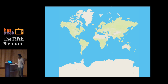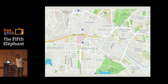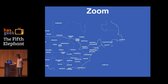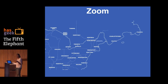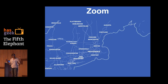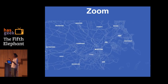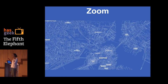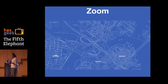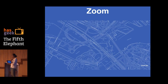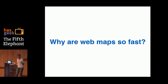A web map contains many, many perspectives of the world. It contains a perspective of the world as the moon or satellites see it. It contains a perspective like the birds see it, and also a perspective like you and me see it. The reason why this is possible is because of the property of zoom. Now as we zoom in to this map of the United States, you will notice that as you go deeper and deeper, there are more details that come up. This means that at any given point in time, the web map holds an immense amount of data at varying perspectives and levels of detail — and yet web maps are incredibly fast.